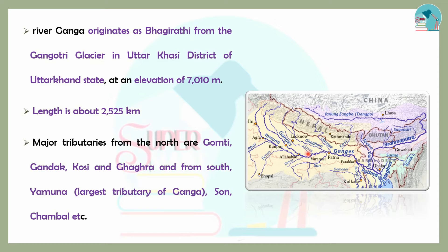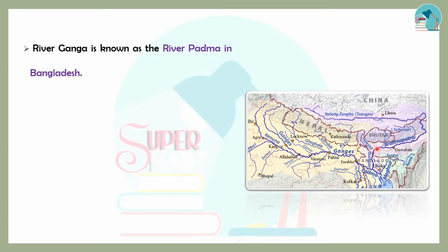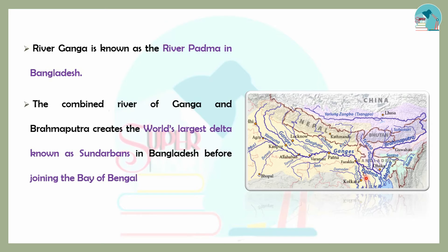The Ganga's main tributaries include Gomti, Ghagra, Kosi, Chambal, and Son. In Bangladesh, the Ganga is known as the Padma River. The Ganga and Brahmaputra join together forming the Sundarbans, which is the world's largest delta. The Ganga drains into the Bay of Bengal.